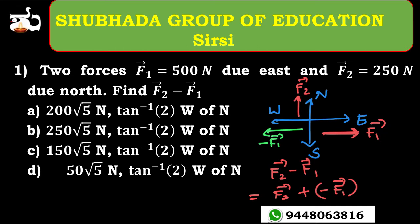So the resultant diagram: F1 is given as 500 N, and F2 as 250 N. The resultant magnitude will be 250 root 5, and the angle will be tan inverse of 2. From west of north, this is the actual resultant. That is why option B should be the right answer.